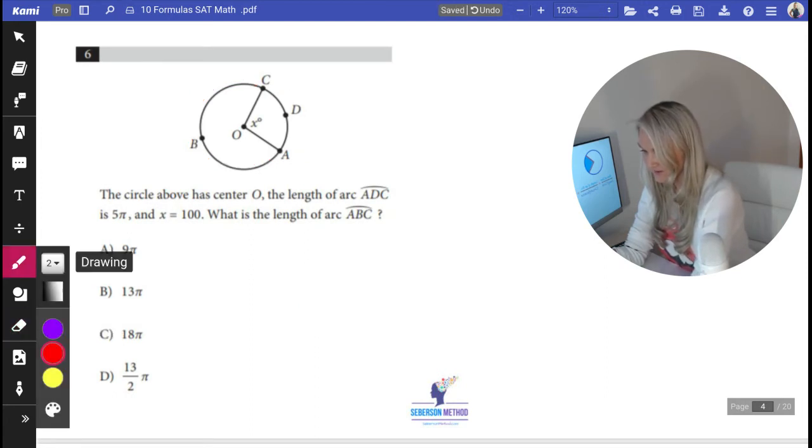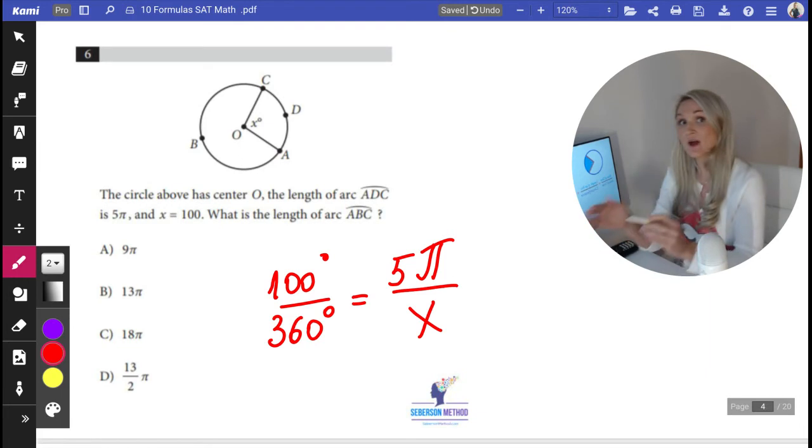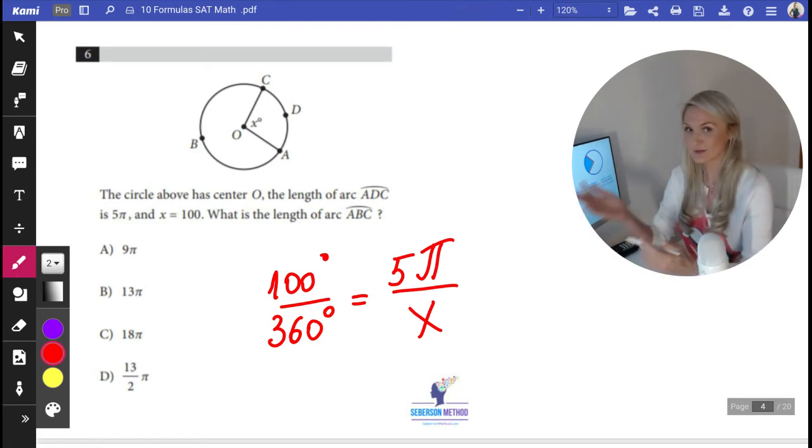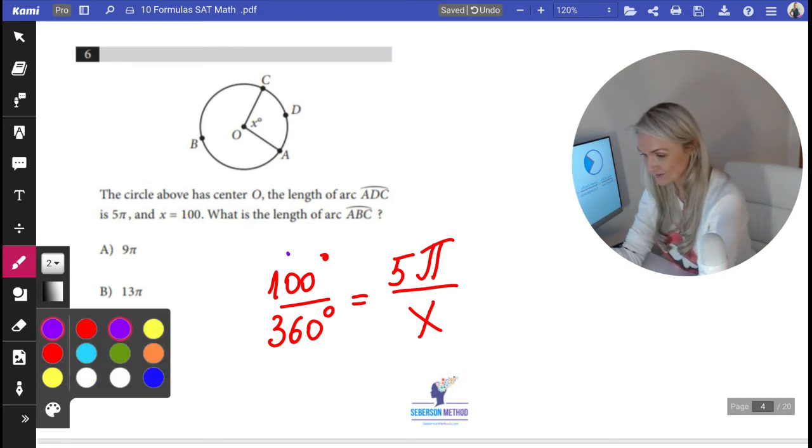So we're given 100 degrees over 360 degrees is equal to the length of the arc ADC, which is 5π over X. We do not know the whole circumference. So what we're going to do is, since we're calculating without a calculator, I'm going to cross out these zeros.